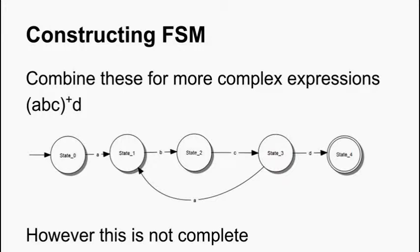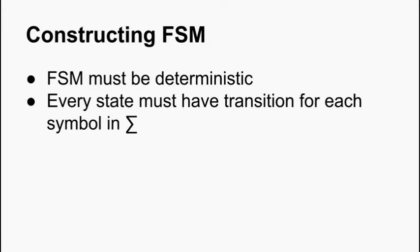However, obviously the machine is not complete. Because finite state machines must be deterministic. So every state must have a transition for each symbol in the alphabet. Otherwise the behaviour is not defined.